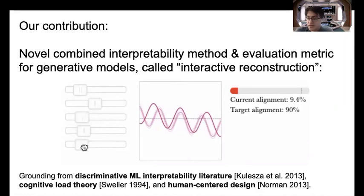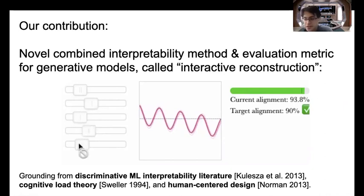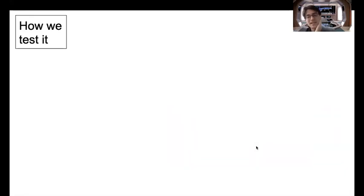Our primary contribution is a novel method for both visualizing and evaluating the interpretability of generative models, which we call interactive reconstruction. In interactive reconstruction, we ask users to manipulate the underlying raw dimensions of generative models to reconstruct target instances to some degree of precision. We then measure whether and how efficiently they learned to perform this task over multiple trials. We designed this task to overcome potential pitfalls identified by interpretability researchers and more foundational work in HCI theory.